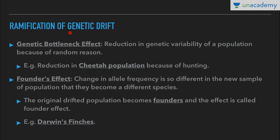There are two ramifications of genetic drift: the genetic bottleneck effect and the founder's effect. The genetic bottleneck effect is the reduction in genetic variability of a population due to random reasons — for example, if there are six alleles and some variability decreases. When a species experiences this effect, they are on the verge of extinction. For instance, death of several members due to natural calamities leads to genetic drift; the population is then restored by mating among survivors, but the new population may lack certain traits, decreasing variability. Example: reduction in cheetah population due to hunting.